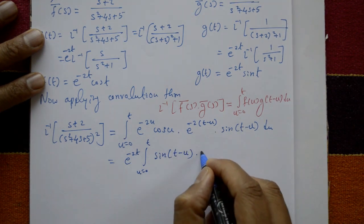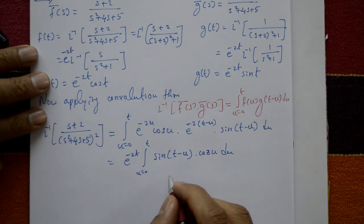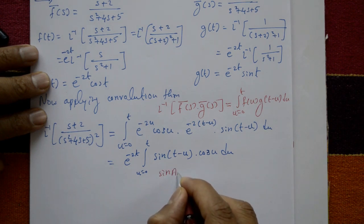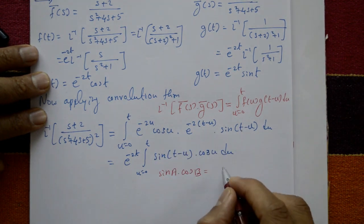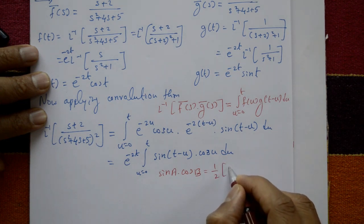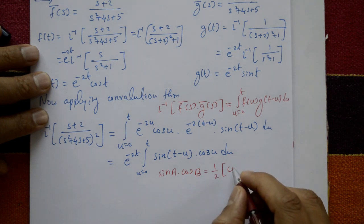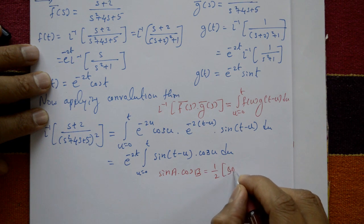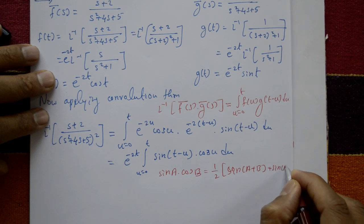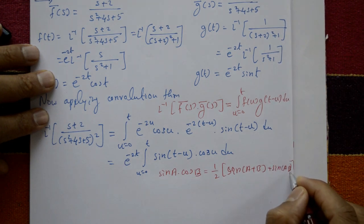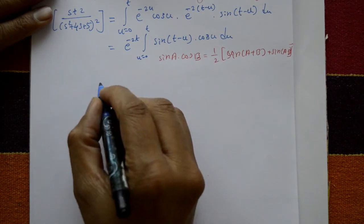Applying the standard formula: sin(a) · cos(b) = ½[sin(a + b) + sin(a − b)]. Here a = t − u and b = u, so sin(t − u) cos(u) = ½[sin(t) + sin(t − 2u)].